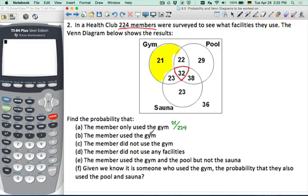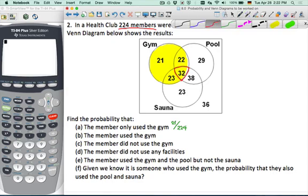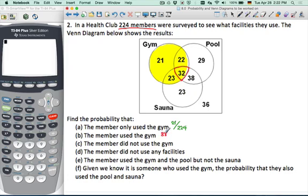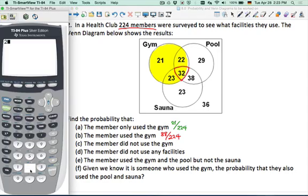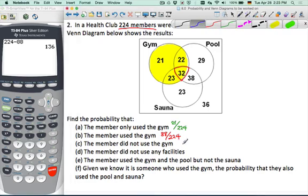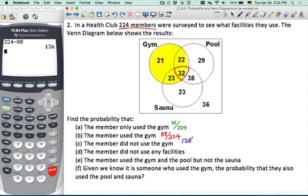The member used the gym. That's a bit larger, isn't it? Now you're taking out all those ones that use the gym. So we should add those numbers. 88. That's a nice number. The members did not use the gym. So it's everywhere else. We could add all these numbers or because we know there are 88 members using the gym, so we can do 224 minus 88. This complement sure has come in handy a lot. 136 over 224.